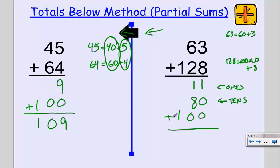Now I've got three totals below to add. I can add my ones column. Eight plus one in my tens column means that I have nine tens, and I know my 100 is all by itself. So 63 plus 128 is 191.